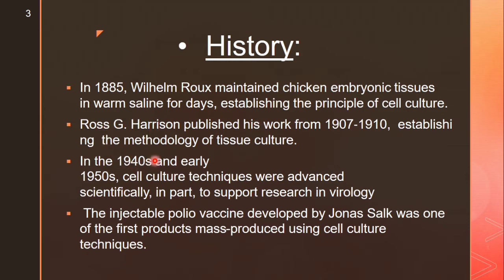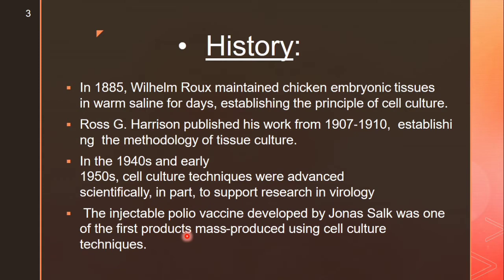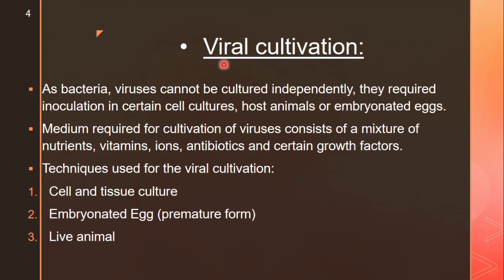In the 1940s and early 1950s, cell culture techniques were advanced significantly, in part to support research in virology. The injectable polio vaccine developed by Jonas Salk was one of the first products mass-produced using cell culture techniques — this is known as viral cultivation.